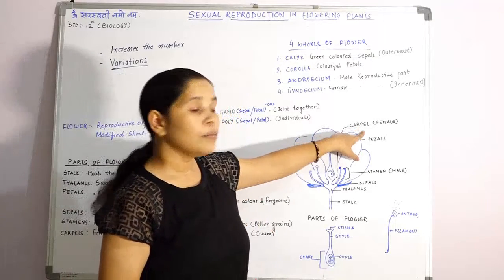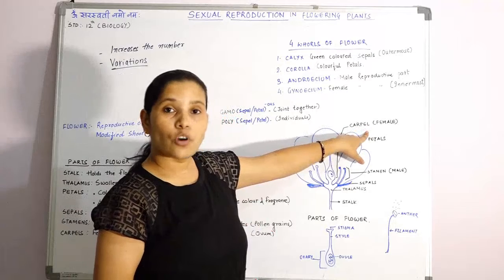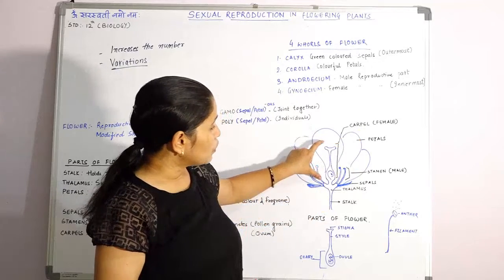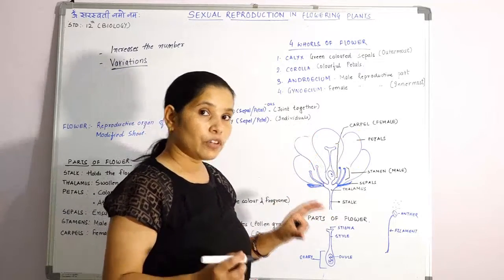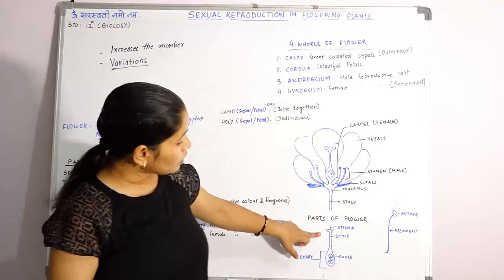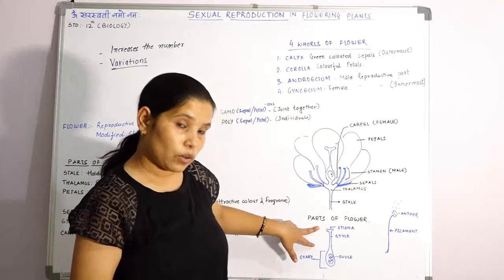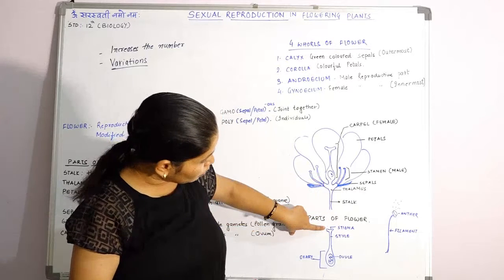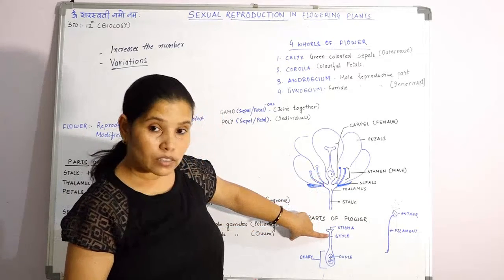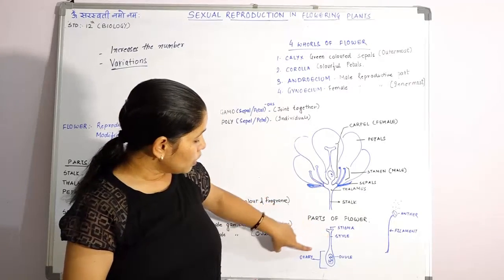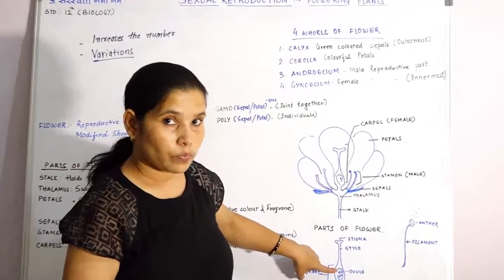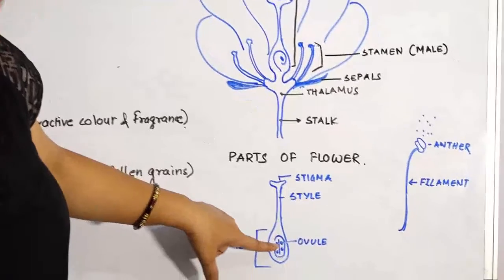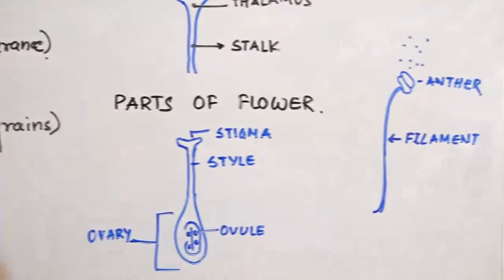Now we will study about the female reproductive part of any flowering plant, which is known as the carpel. Carpel consists of the female reproductive parts. In an enlarged view of the carpel, you get the stigma at the upper portion. Below that is the style. And below the style you get the ovary. Ovules are small spherical structures found inside the ovary — this vessel portion is known as the ovary.